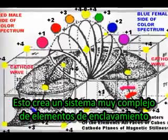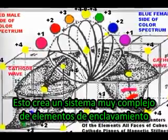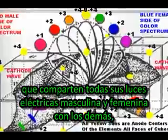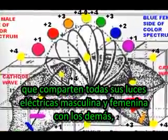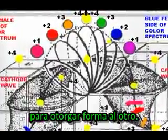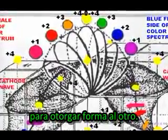This creates a very complex system of interlocking elements which all share their male and female electric lights with each other to give each other form.